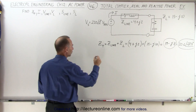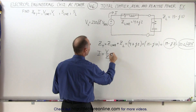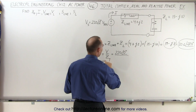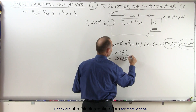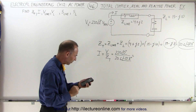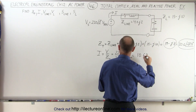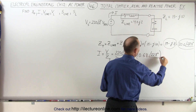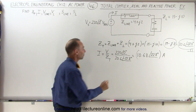Next, we want to find the current. By Ohm's law, current I equals V over Z — the voltage of the source divided by the total impedance. So this equals 220 volts at 0 degrees divided by 20.6 at negative 22.8 degrees. That gives us 10.68 amps with a phase angle of positive 22.8 degrees.